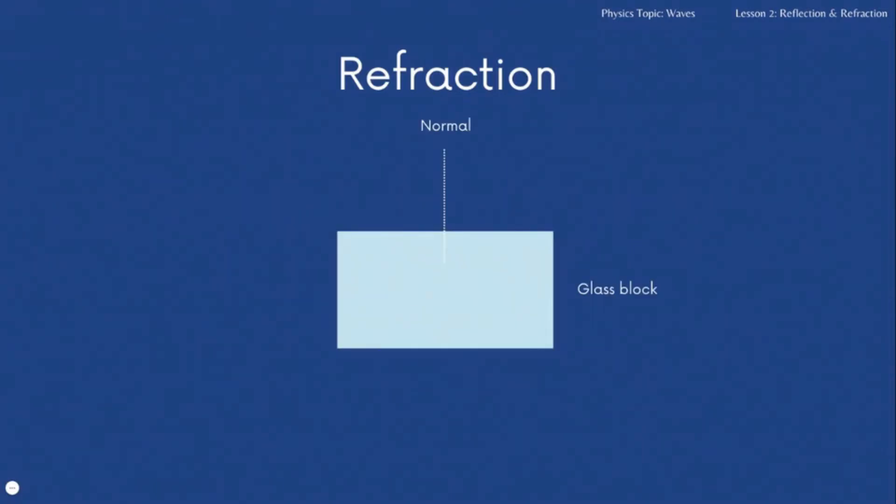So you've got your normal there. We talked about that on the mirror, that's at 90 degrees to the glass block. Your incident ray's coming in, it hits the normal at the point that it enters. The light ray entering the glass, that angle changes. Look, it moves towards the normal at that point. Then when it leaves the glass block, obviously there's another normal, another 90 degree line. It is coming out at a different angle. So it has refracted. That's a refracted ray. And if you were to place a ruler along those lines, they would no longer be on a straight line.